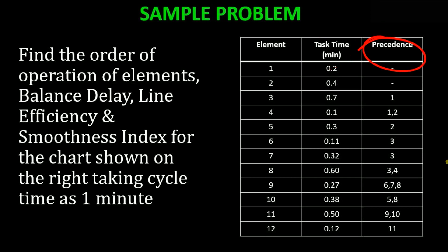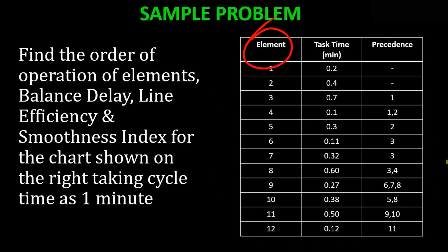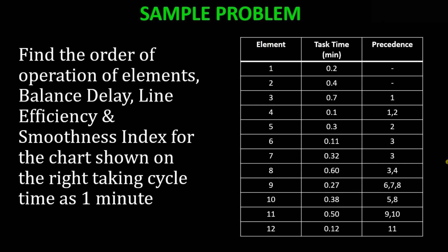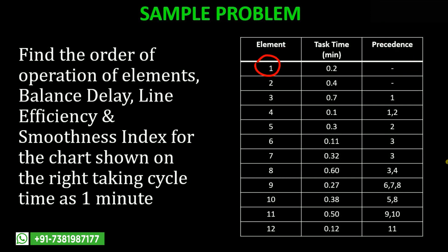The first column is for the element — the work element. The second column is for the task time. The third column is for the precedence relationship. We have a total of 12 work elements here, from 1 to 12, and each work element's time is given. The first work element takes 0.2 minutes, the second takes 0.4 minutes, and so on.